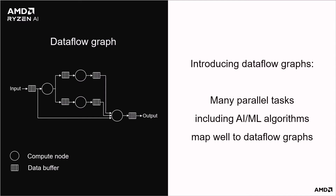I'll briefly introduce dataflow graphs. We'll use these in Rialto to design software applications and map them onto the Ryzen AI dataflow architecture. A dataflow graph is simply a graphical representation of the application. Parallel and data-intensive tasks, including machine learning algorithms, map well to these types of graphs. The graph consists of compute nodes and data buffers, as shown in the simple four-node example here. Nodes could be very simple operations or larger software functions. For example, a graph could represent a layer of a machine learning algorithm with many nodes each representing an operator, or alternatively a node could represent a whole layer of the network. We will typically map nodes in our dataflow graph to compute tiles, so a node will represent a software function that is a significant part of an application.